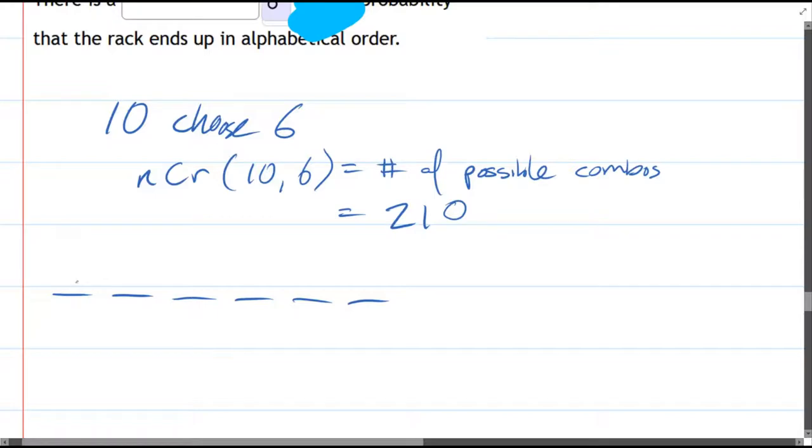If you have the littlest or the beginning alphabet on the left, and as you go to the right, they're increasing. So they need to be in increasing order. And there's only one way that they can be lined up in order.